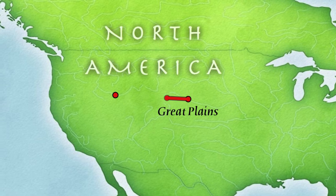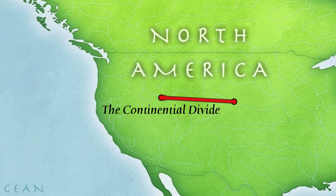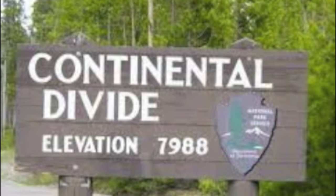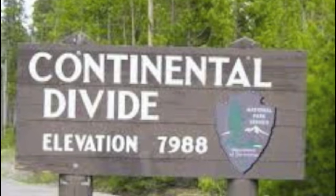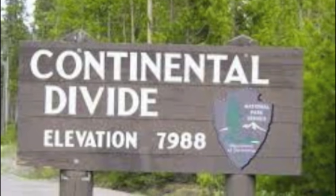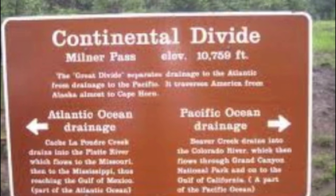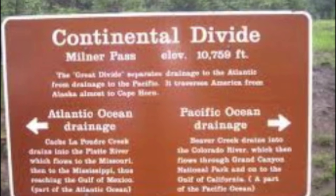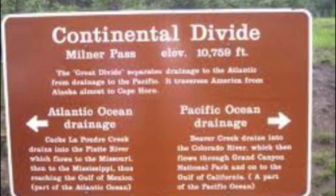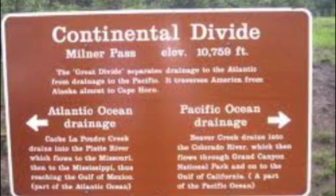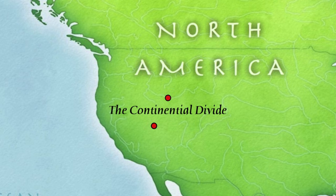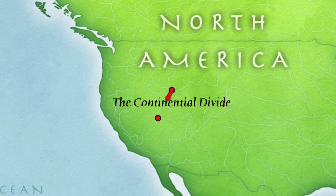The Continental Divide is an imaginary line in the United States that is home to the Rocky Mountains. Rivers on the eastern side of the Continental Divide flow to the Atlantic Ocean or the Gulf of Mexico. The rivers on the western side flow to the Pacific Ocean.